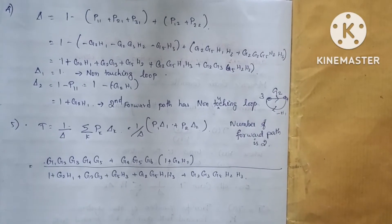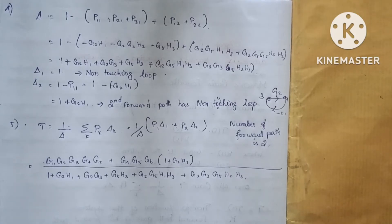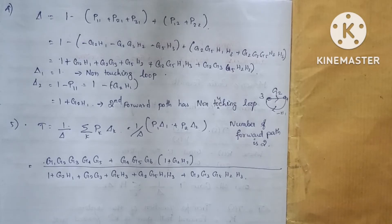Next we calculate delta. Delta equals 1 minus the sum of individual loops, plus the sum of products of all possible non-touching two-loop combinations, minus three non-touching loops, and so on.